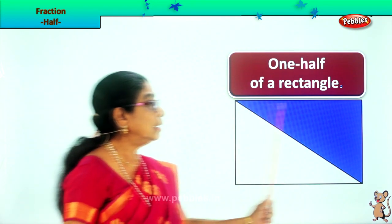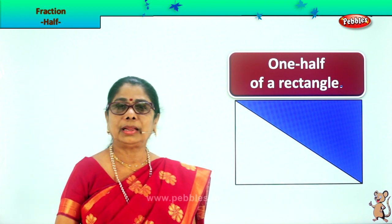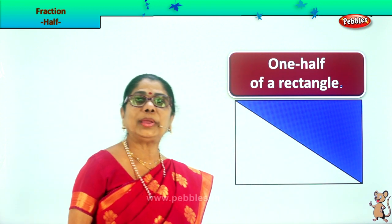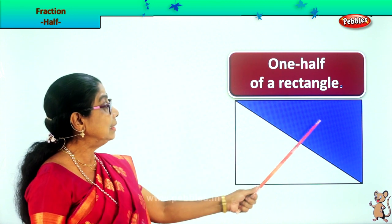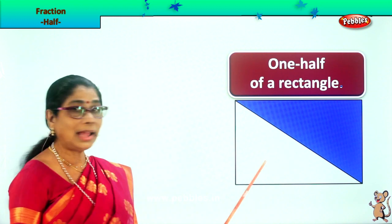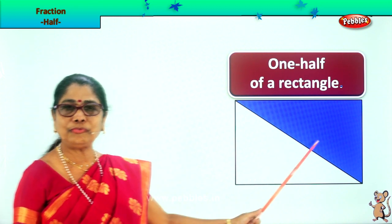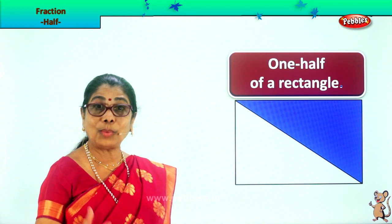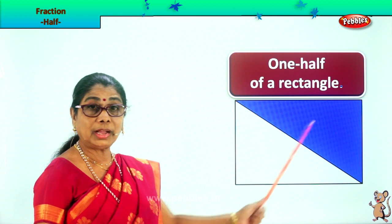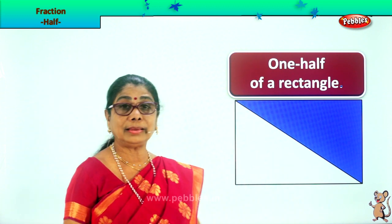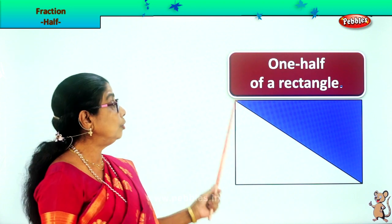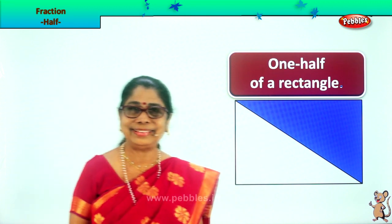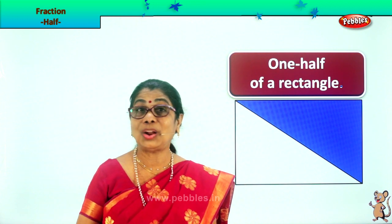What is this? A rectangle. This whole rectangle, when we cut — put a line across — we say this is one half of a rectangle, and this is one half of a rectangle. So we have two equal halves: one half and another half. We represent it as one by two — one part out of two parts. You can cut the whole rectangle into two equal parts, and each part is called one half of a rectangle. Now you understand what is the meaning in fraction of one half.